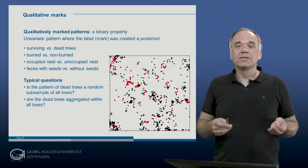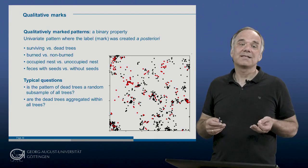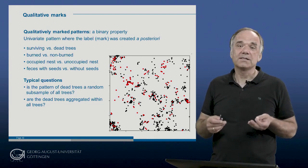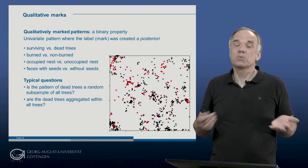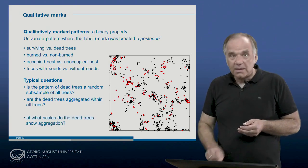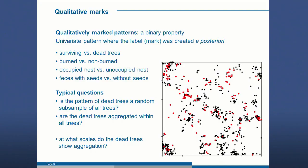For example, if dead trees are aggregated, we may get information on typical scales of competition by controlling. We can ask for the typical spatial scales where dead trees are aggregated.